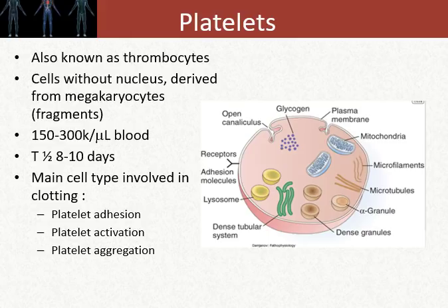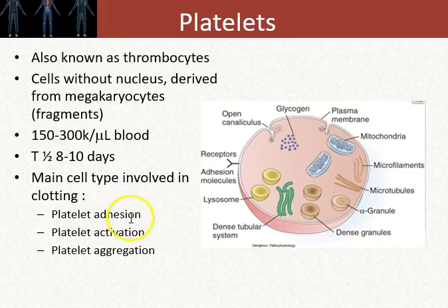Central to these clots are platelets, also known as thrombocytes. They are cell fragments derived from megakaryocytes, and they have a relatively short half-life — they only live about 8 to 10 days. Platelets play major roles in the formation of clots. When talking about the clotting cascade, platelets can adhere to each other, activate other platelets, have effects on the endothelium, and of course they can aggregate. When they aggregate, those clots get bigger and bigger, and that's when pathology starts to manifest itself.